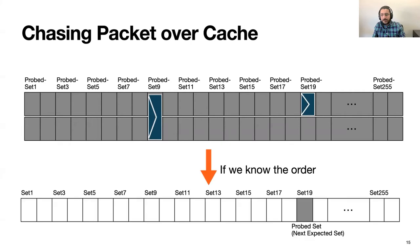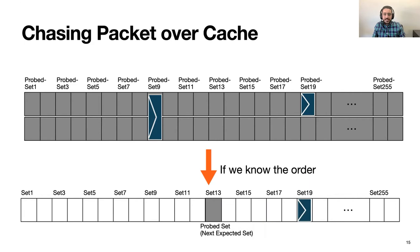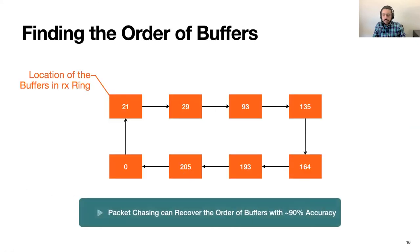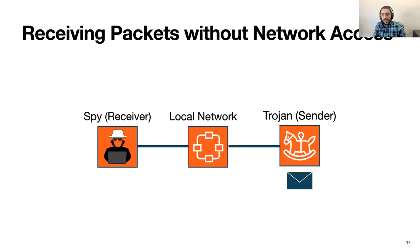However, if we know the order in which these buffers get filled, we can actually chase the packets over the cache by only probing the cache set corresponding to the next expected buffer. By reducing the probe size to just one, we can detect individual packet arrivals and build a powerful, high-resolution attack. We show that using a statistical algorithm it is possible to recover the order of the buffers in the driver with almost 90% accuracy.